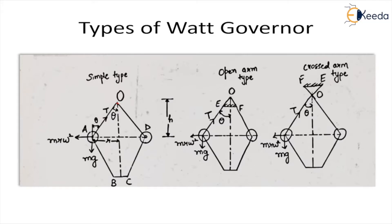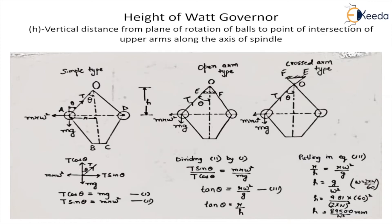The second type is the open arm type of governor, in which the pivot is at point O but is slightly offset. The upper arms are connected to a link which we have named EF. This part EFO is an imaginary line to indicate that if you extend this line they appear to meet at a point O. The third type is the cross arm type governor, in which the pivot is offset and the arms and links are in a cross position, connected to a horizontal link named FE.